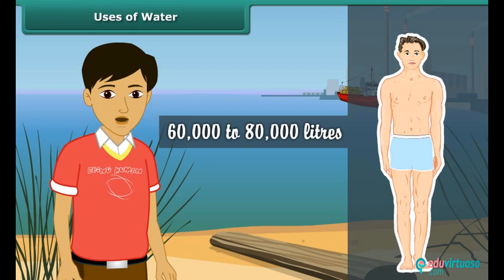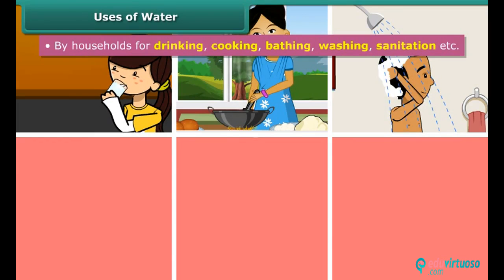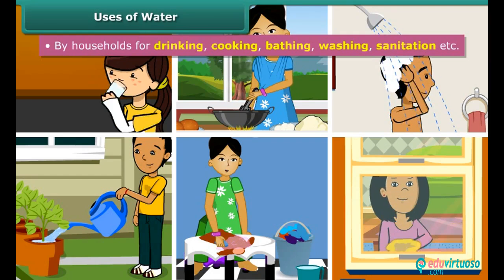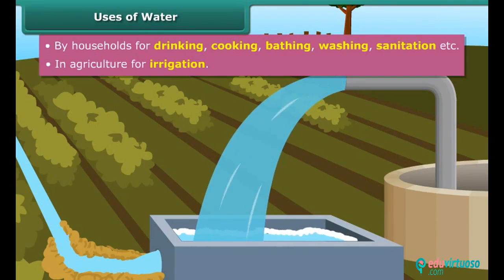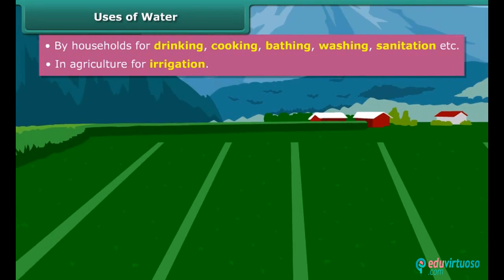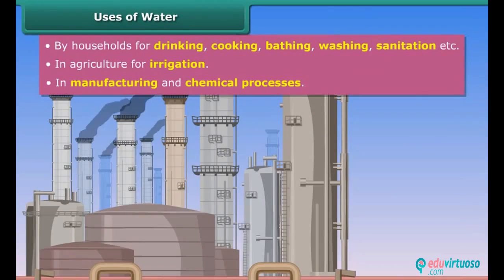Water is used in households for drinking, cooking, bathing, gardening, washing and cleaning purposes. Irrigation facilities improve agricultural output and help meet the growing demand for food from a growing world population. Irrigation also acts as an insurance against the vagaries of nature.